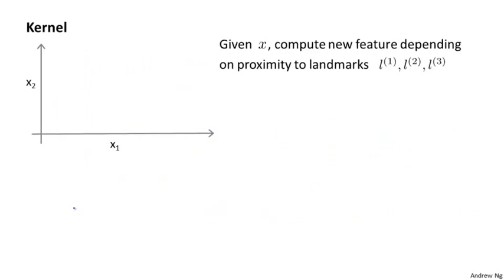Here's one idea for how to define new features f one, f two, f three. On this slide I'm going to define only three new features, but for real problems we're going to define a much larger number. In this space of features x one and x two, I'm going to manually pick a few points. I'm going to call this point l one, this one l two, and this one l three. I'm going to call these three points landmarks. What I'm going to do is define my new features based on these landmarks.